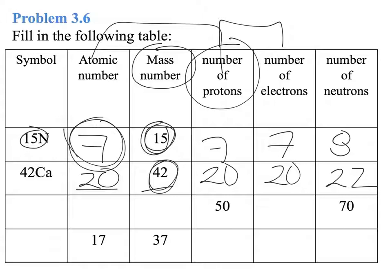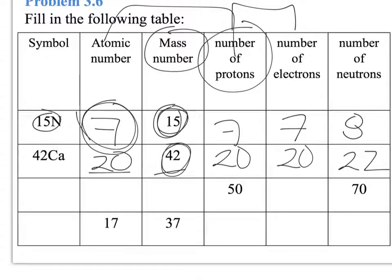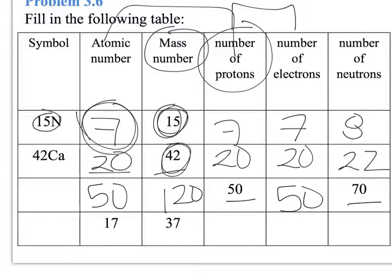This element — they are not telling you which element it is, but they are telling you that it has 50 protons. Therefore, 50 is the atomic number and also the number of electrons, because it is neutral. The mass number will be the number of neutrons plus the number of protons, so that's 120. We look at the periodic table for element number 50, which is tin, and we write tin-120.